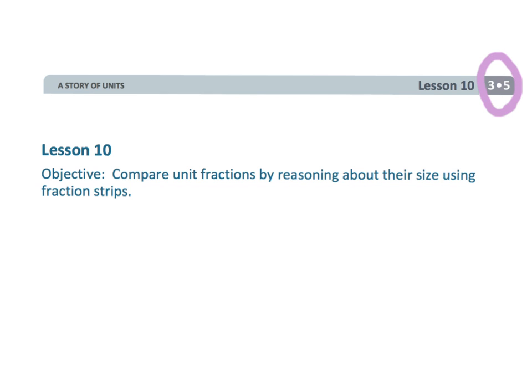This is grade 3, module 5, lesson 10. In this lesson, students are going to be comparing unit fractions by using number sense and reasoning. They're not going to use some sort of standard algorithm — they're just going to use logic, common sense, and number sense in order to compare those fractions.